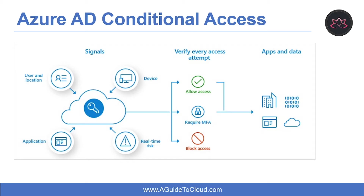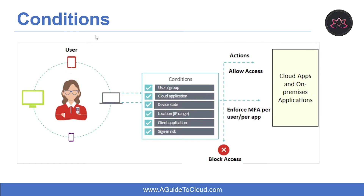By using Conditional Access policies, you can apply the right access control when needed to keep your organization secure and stay out of your user's way when not needed. These Conditional Access policies are enforced after the first factor authentication has been completed. Conditional Access is not intended as an organization's first line of defense for scenarios like denial of service attacks, but can use signals from these events to determine access. Conditional Access is an effective way to enable access to resources after specific conditions have been met.